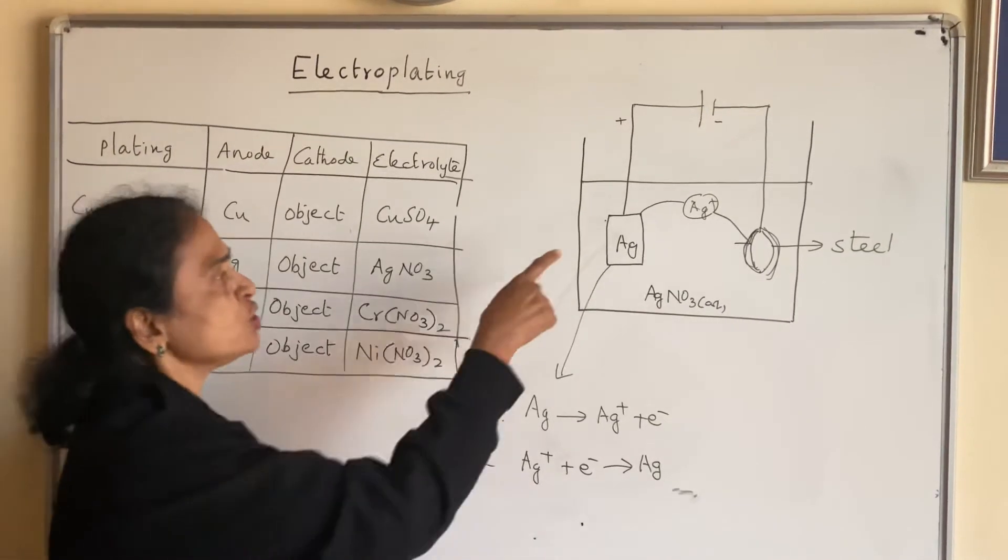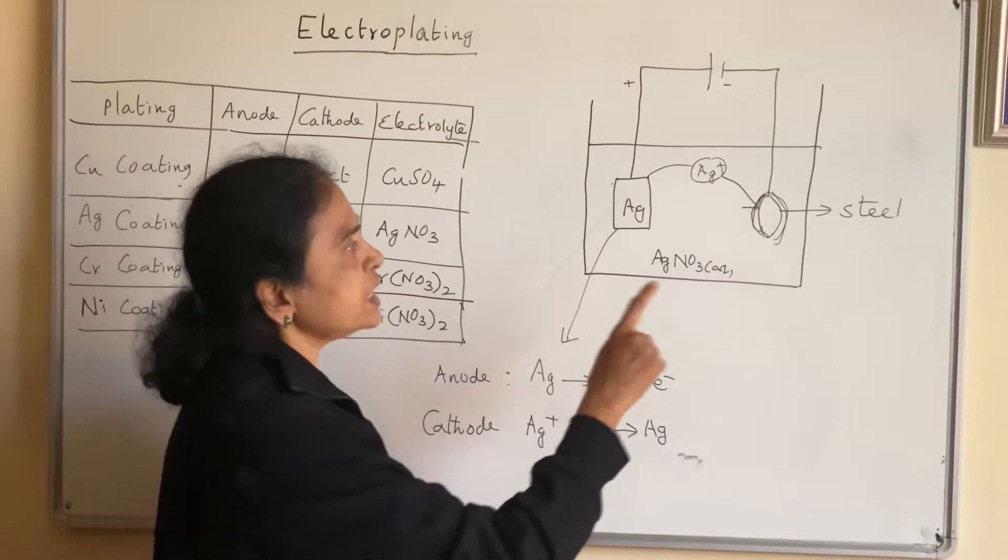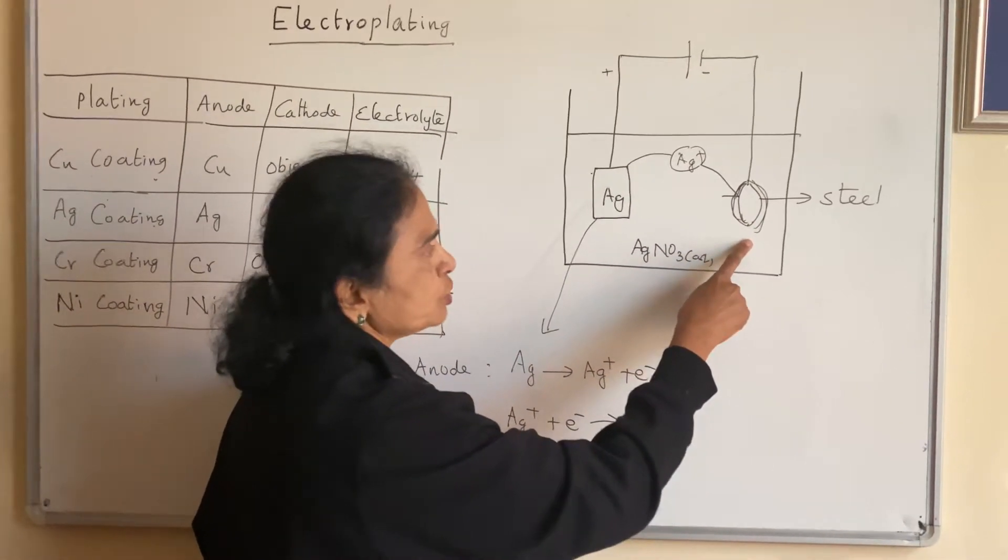The reason is the rate of oxidation of silver at anode is the same as the rate of reduction at cathode.